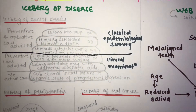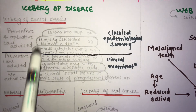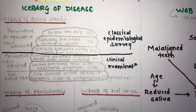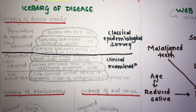Starting with the iceberg of disease: an iceberg is a large part of ice that has broken off from a glacier and is floating on water, with only one-ninth of it visible above the water. The iceberg of disease, or iceberg phenomena, is a metaphor emphasizing that in every health problem, the number of known cases is outweighed by those that remain undiscovered — just as only a small part of the iceberg is visible above water.